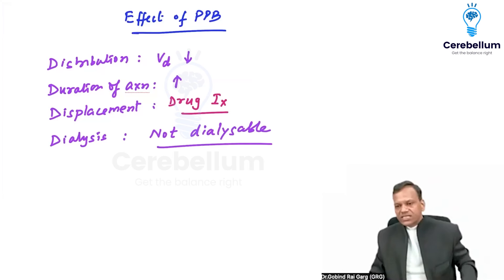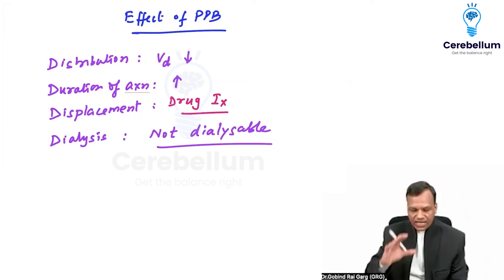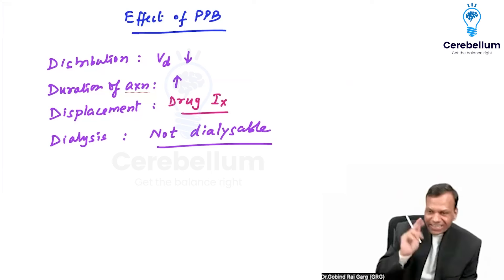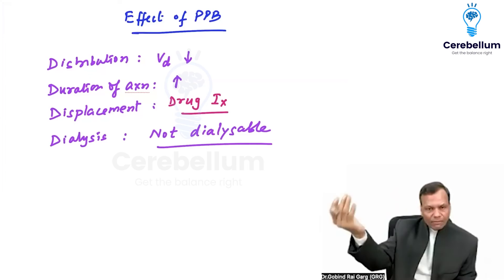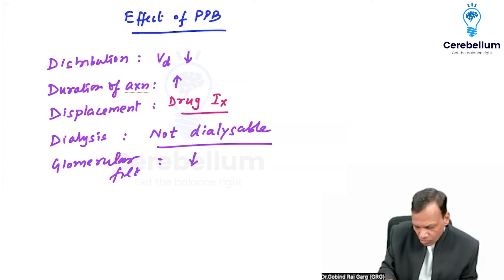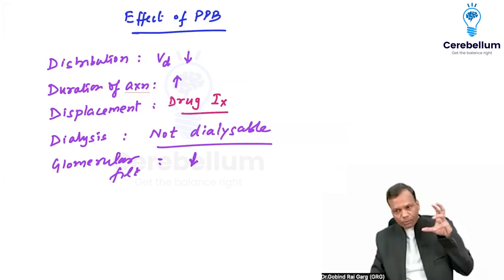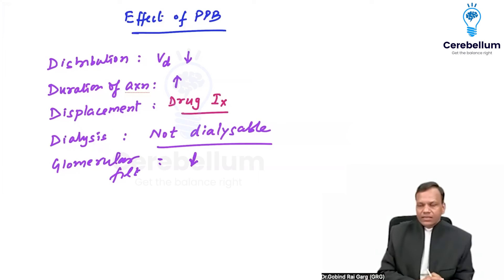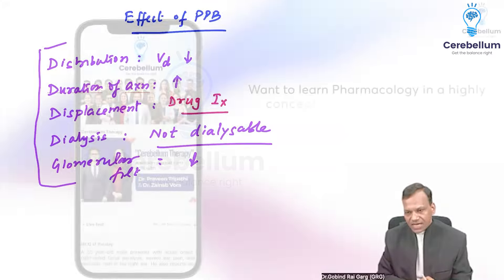Dialysis will not be effective in drugs whose plasma protein binding is very high. So, four Ds in plasma protein binding. The fifth we will cover later with excretion. If a drug has high plasma protein binding, its glomerular filtration will be less. Glomerular filtration cannot occur because proteins are not filtered by the glomerulus. So these are the five important effects of plasma protein binding on which questions are asked.